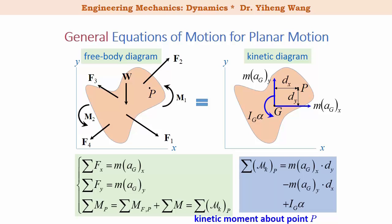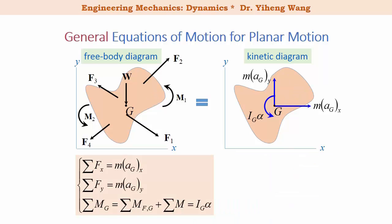For general plane motion, we can simply apply these equations of motion that we learned previously. In this case, the total moment is summarized about an arbitrary point P, and it equals to the total kinetic moment about the same point P. Or its alternative form: the resultant moment summarized about the gravitational center point G equals to simply IG alpha.